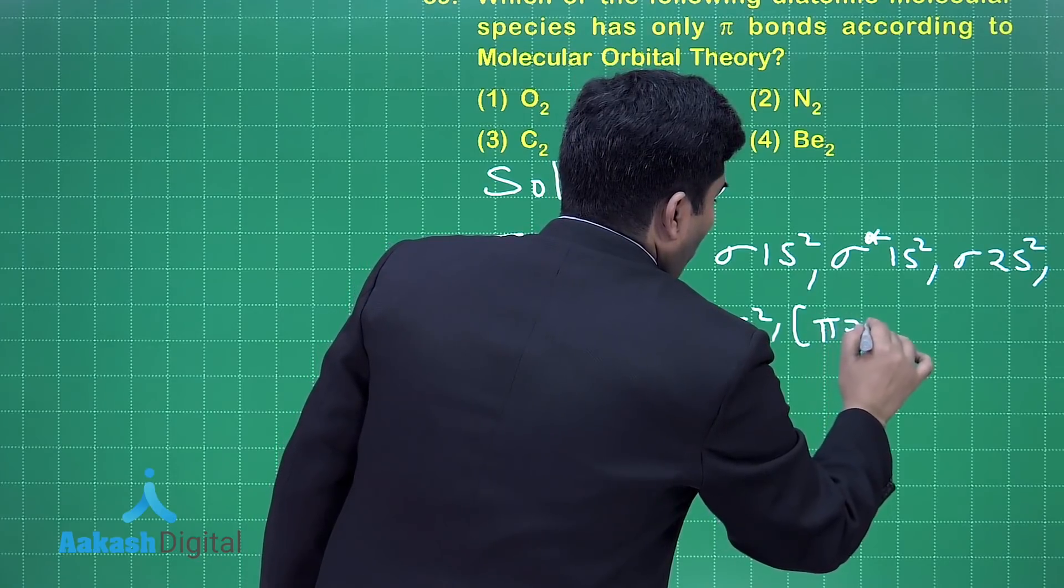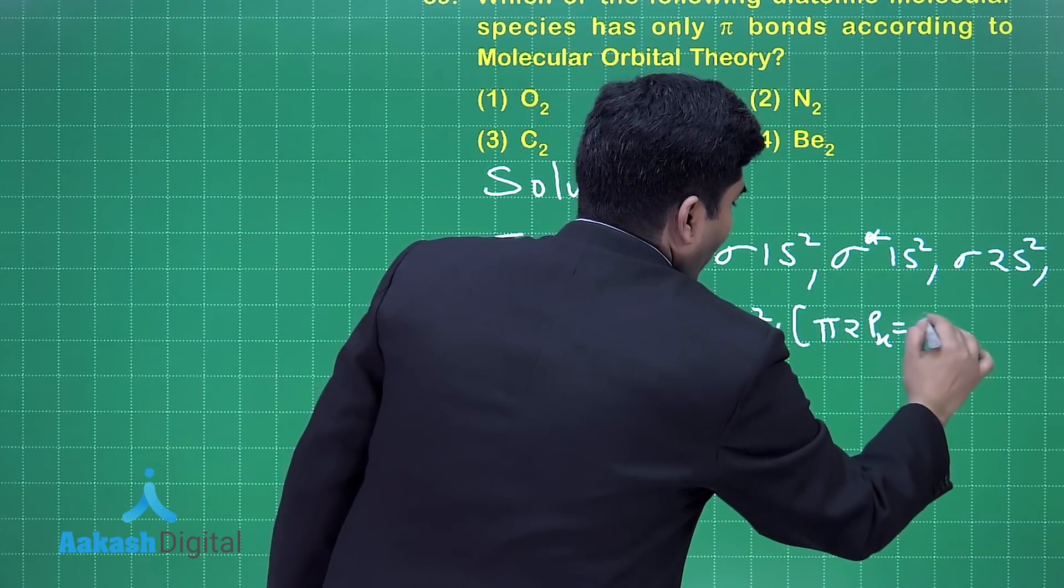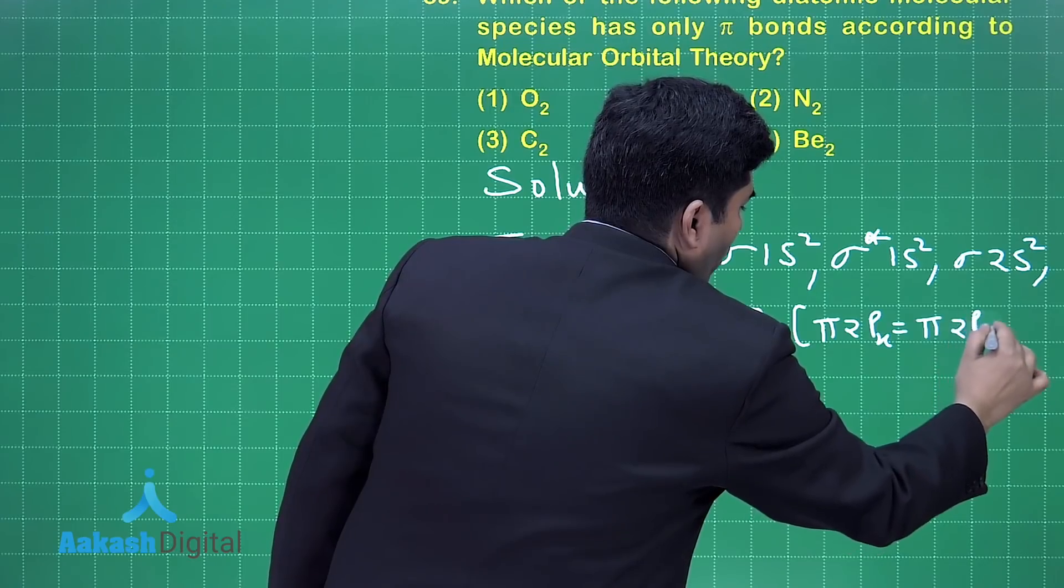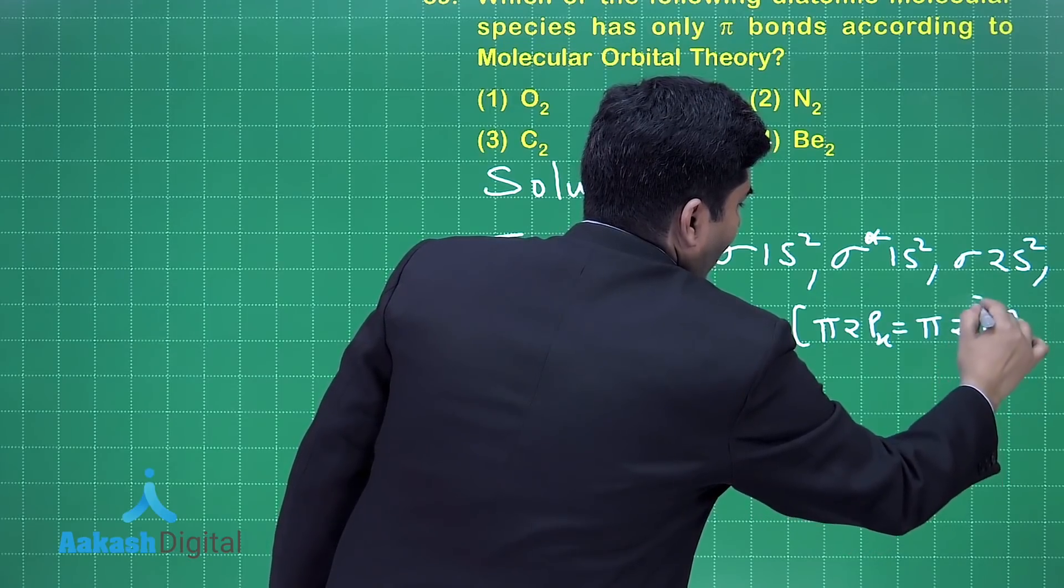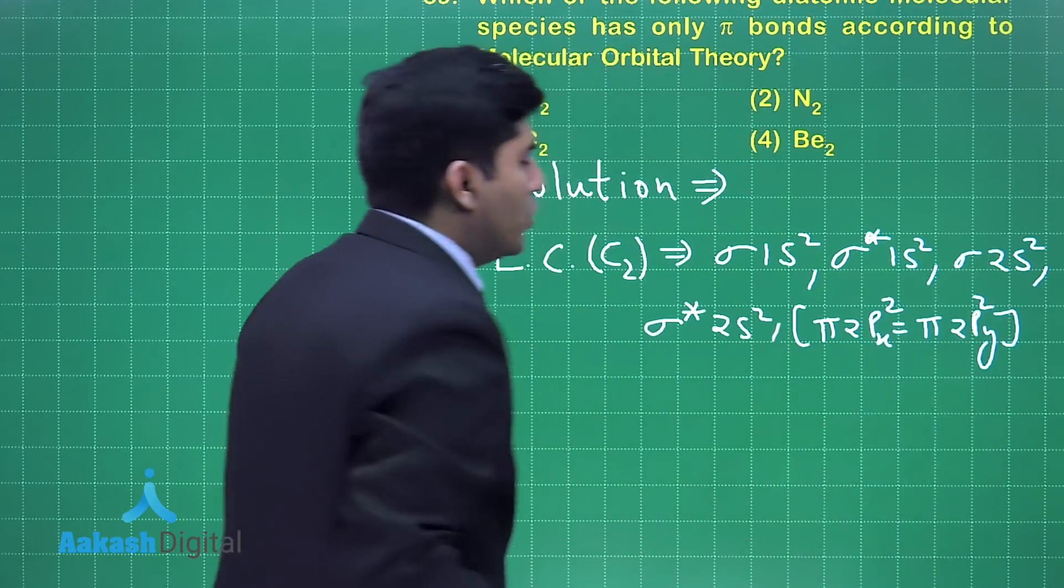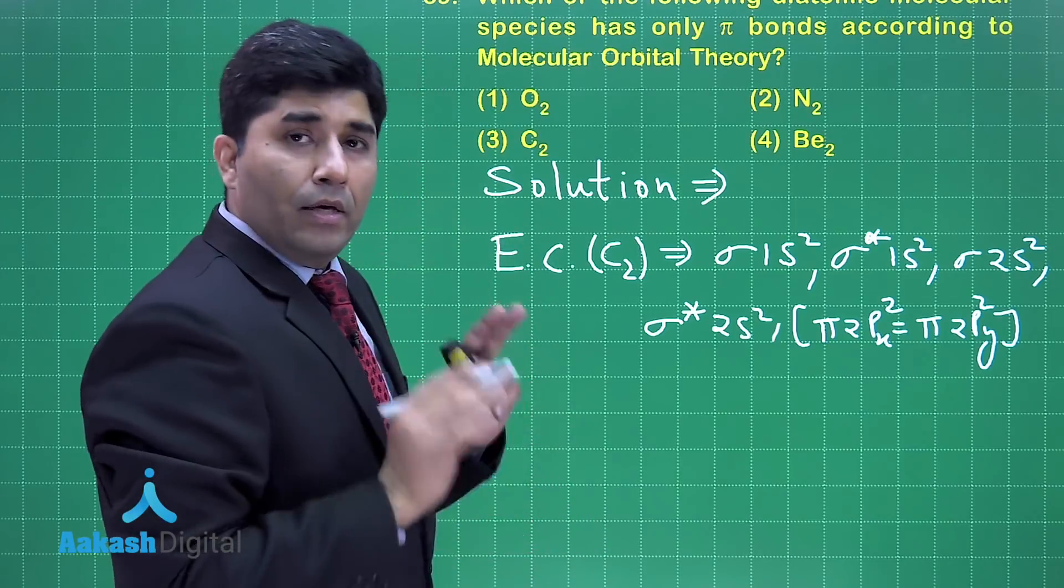π2px = π2py, with 2 electrons in each pi orbital.